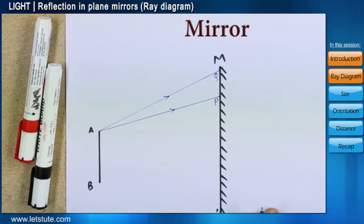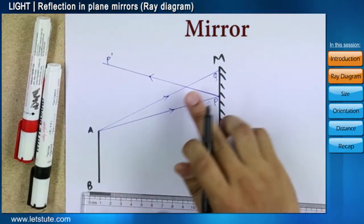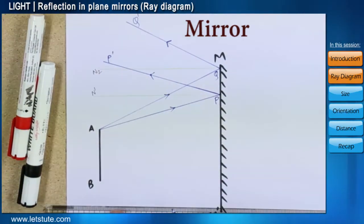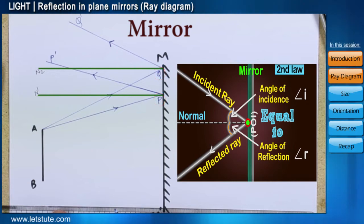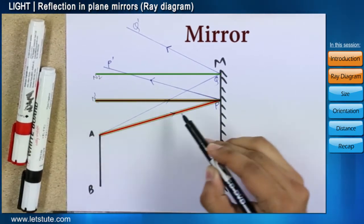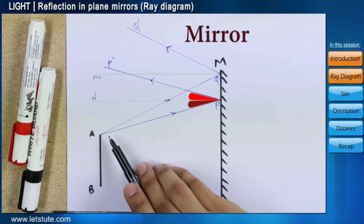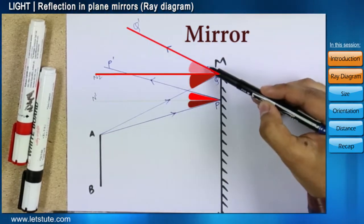After they strike the mirror, ray AP will be reflected as P, P dash, while ray AQ will get reflected as Q, Q dash. Let PN1 and QN2 be the normals drawn at points P and Q respectively. Thus, following the laws of reflection, angle APN1 is equal to angle P dash PN1 and angle AQN2 is equal to angle Q dash QN2.